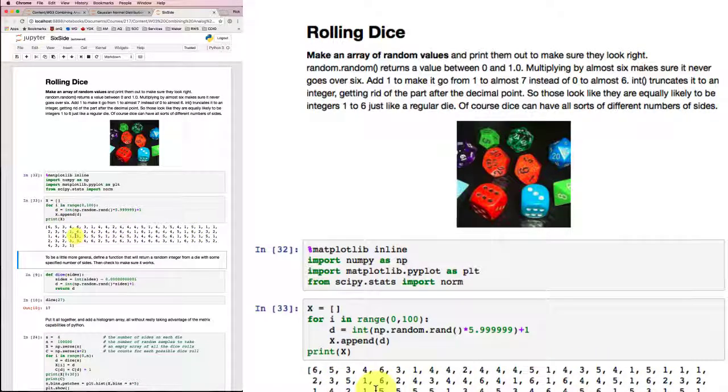That looks like a collection of relatively random numbers going from 1 to 6. We can't tell that by looking at them really, but we could test that a little bit later.